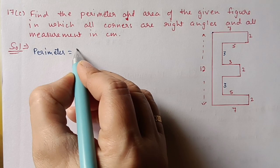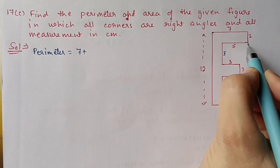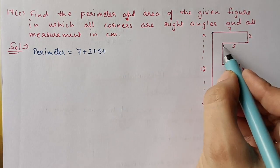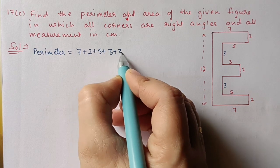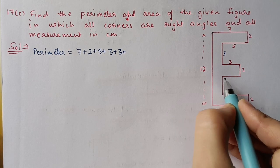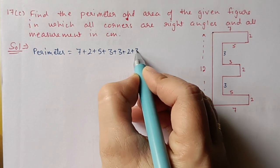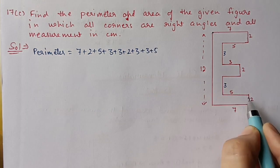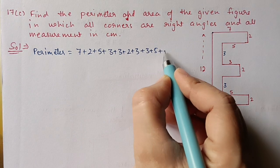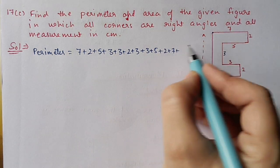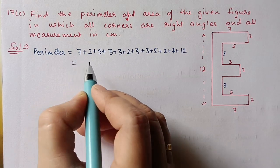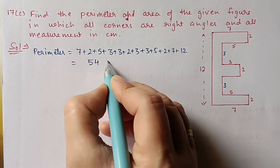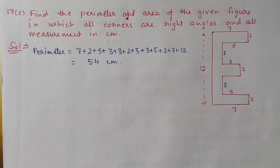For perimeter, we measure the boundary starting from one corner: 7, then 2, 5, 3, 3, 2, then again 3, 3, 5, 2, then 7, and finally 12. After adding all these, we are getting 54 centimeters.